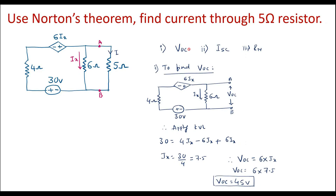Now we have found VOC. We will try to calculate ISC, which is the short circuit current. In this circuit, at terminals A and B it is open, so no current flows. If I short terminals A and B, it becomes a closed loop and current will flow between A and B. The current flowing through that shorted path between A and B is known as ISC.